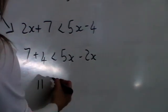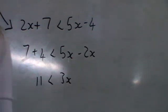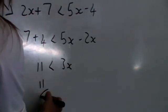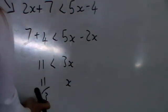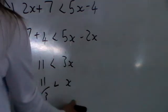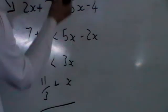7 plus 4 is 11, 5x minus 2x is 3x. We divide both sides by the 3, but because we are dividing by a positive, we do not reverse the sign. And we still have x as greater than 11 over 3, which is the same answer as before.